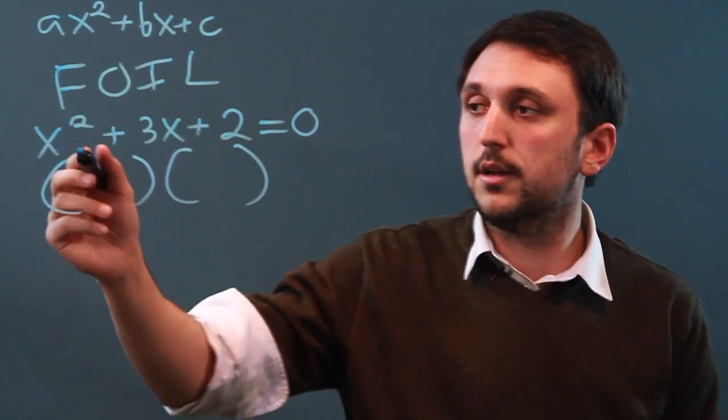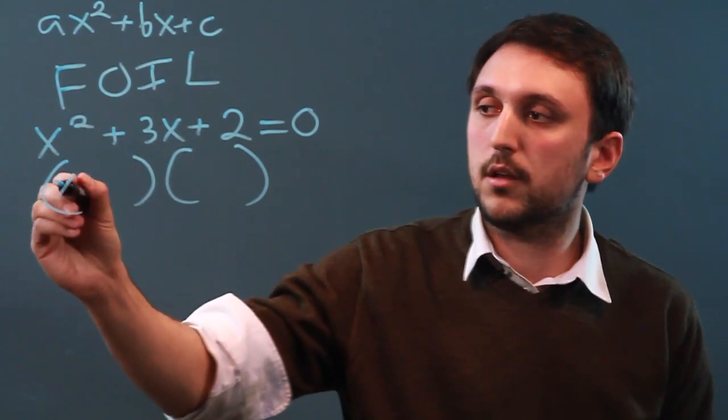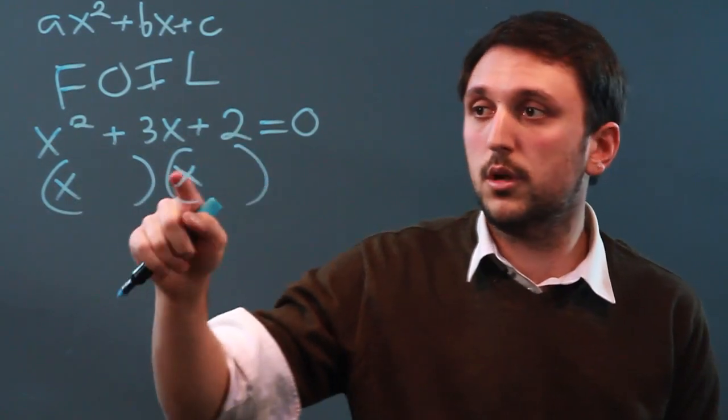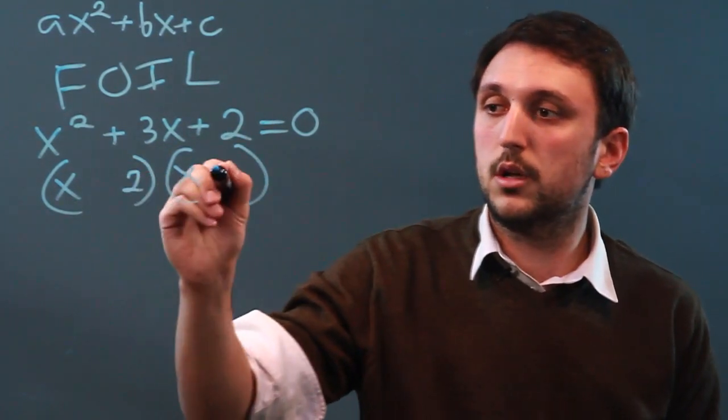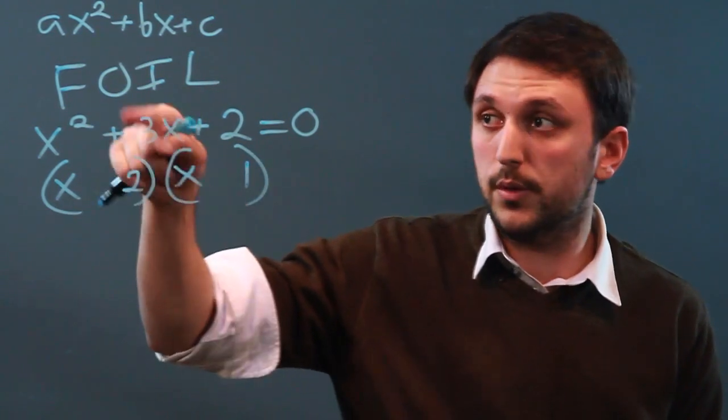First outside, so we say, okay, well, we need x squared, so that's going to be x times x. And then the other outside, which is 2, which is going to be 2 times 1. And then we have a plus and a plus when we deal with the inside.